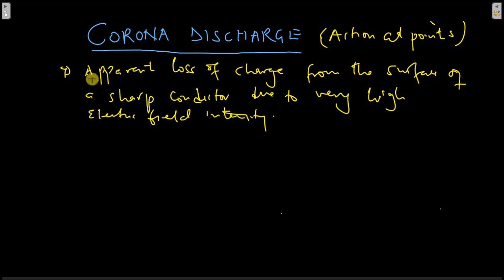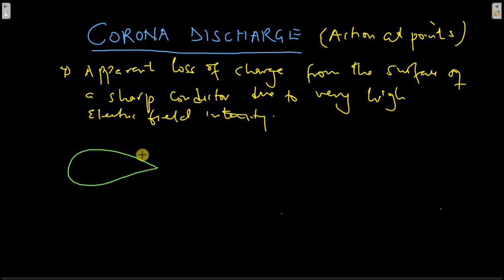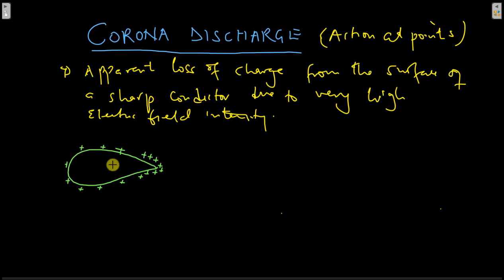Let's see how corona discharge works. Suppose we have a pear-shaped conductor like the one we discussed in the previous section. Let us assume this conductor is given a positive charge. We know that the positive charges are going to concentrate more on the sharp end than the other part of the conductor. This is a typical distribution of charge for such a conductor. Notice that there is more charge density at the sharp point than the other points.